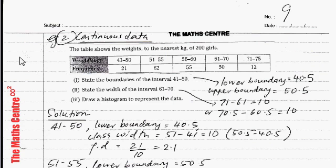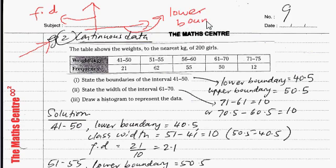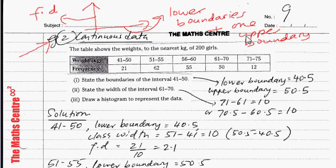Next let's deal with continuous data — we are going to plot a histogram involving continuous data. The vertical axis will be frequency density (frequency divided by class width). On the horizontal axis we will indicate lower boundaries, plus one upper boundary for the last class.